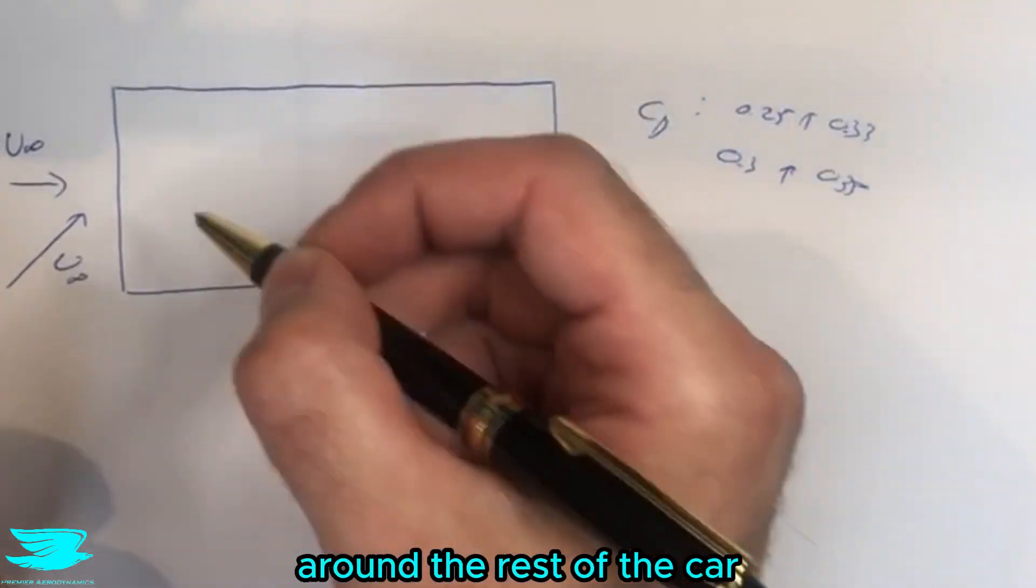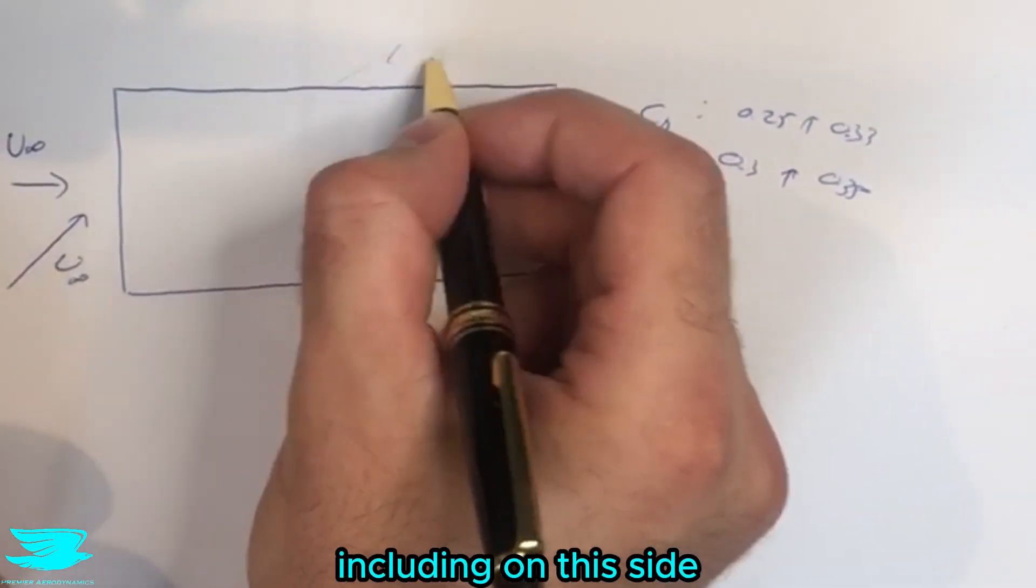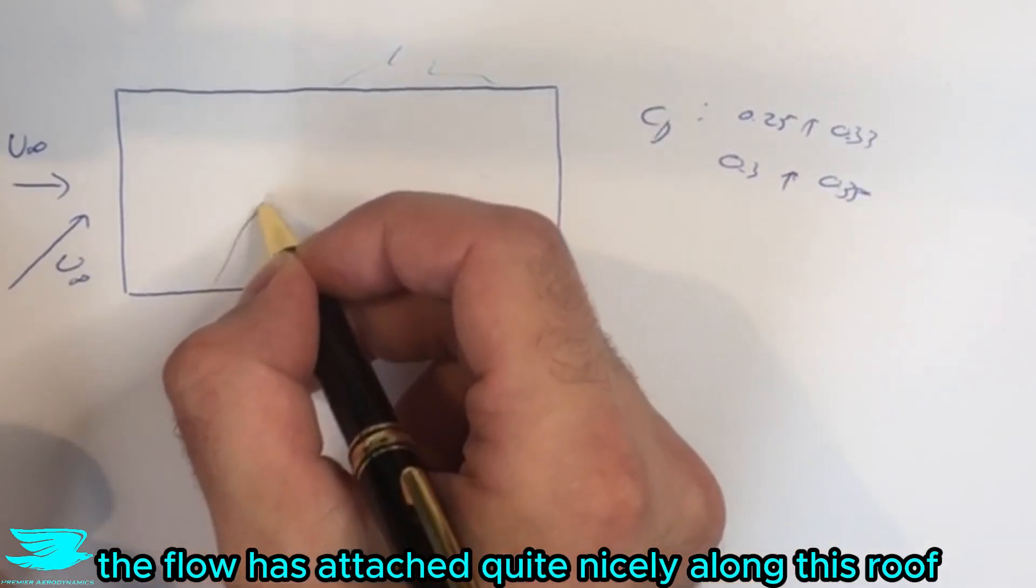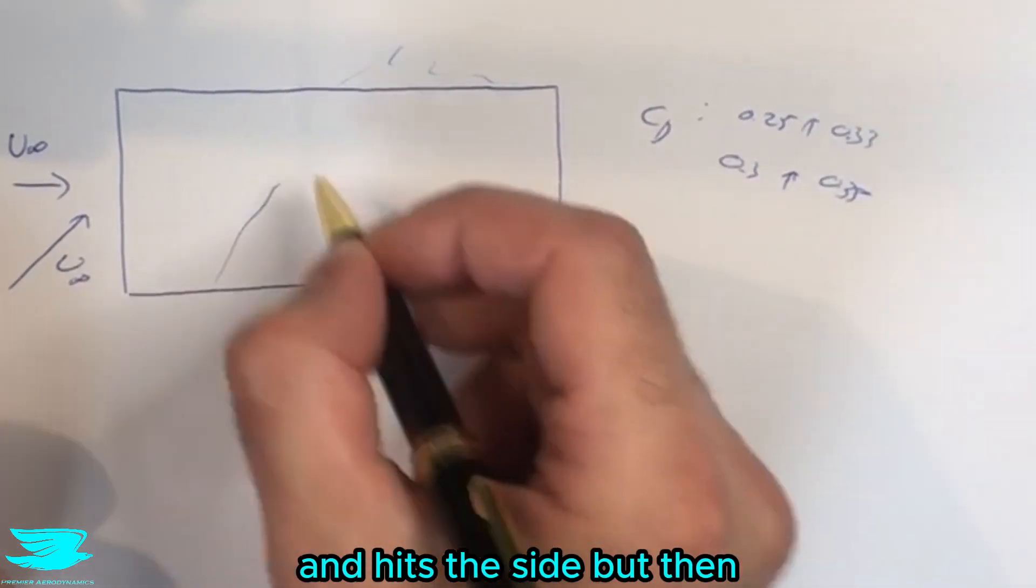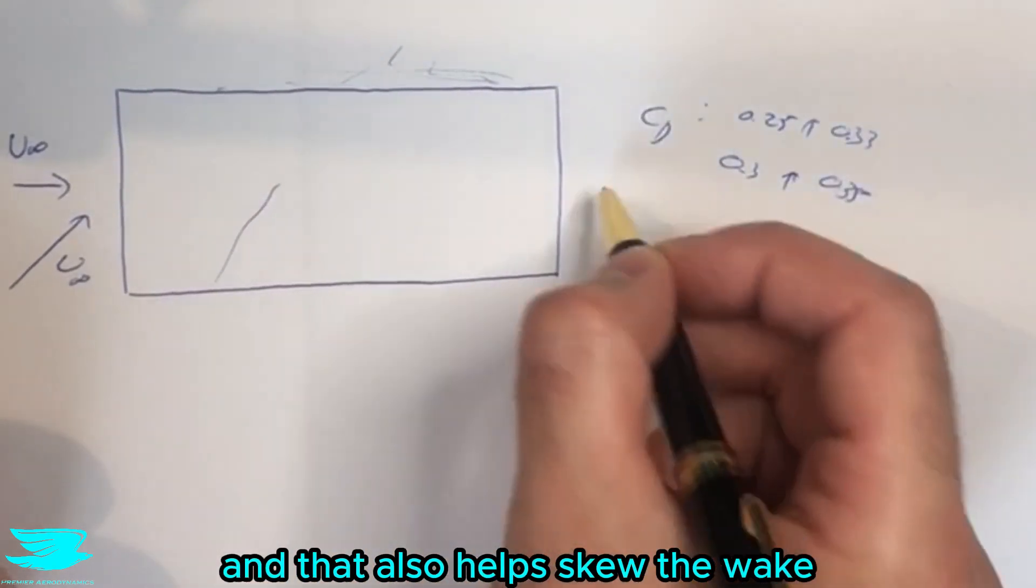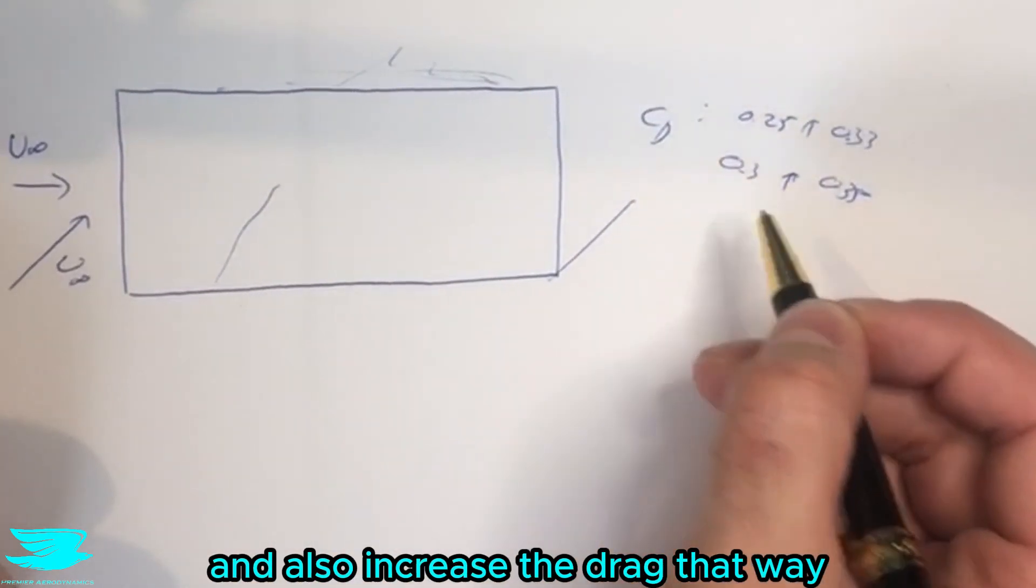So now we get far greater wakes happening around the rest of the car including on this side. Let's say the wind is coming this side, the flow attaches quite nicely along this roof and hits the side, but then we get a massive separation zone around this region and that also helps skew the wake and increase the drag that way.